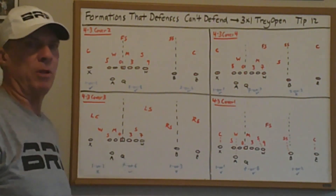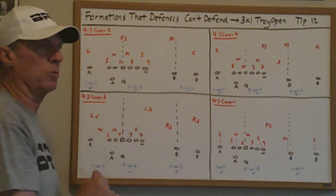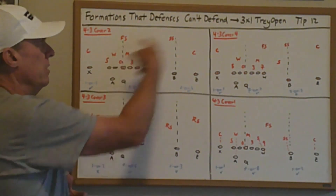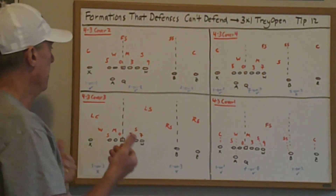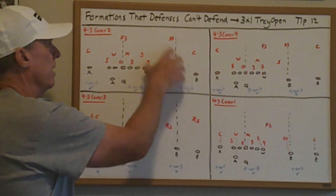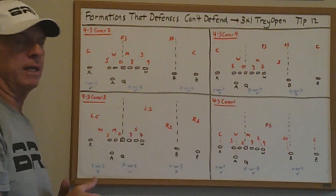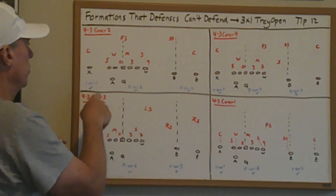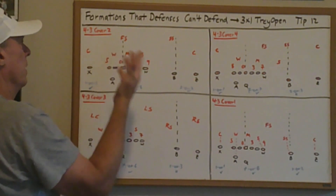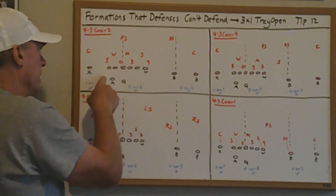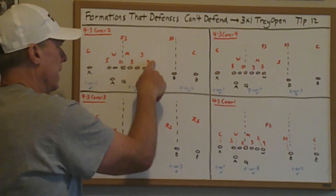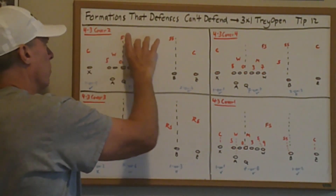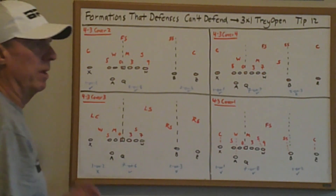From a defensive scouting perspective, that's how this formation would be labeled. Looking at how Trey Open is a formation defense can't defend, there are three quadrants to assess across four different coverages. A line is drawn straight down the outside of the tackle and straight down the outside of the tight end, separating the field into the left pass side, the run box, and the right pass side, then the numbers are evaluated.